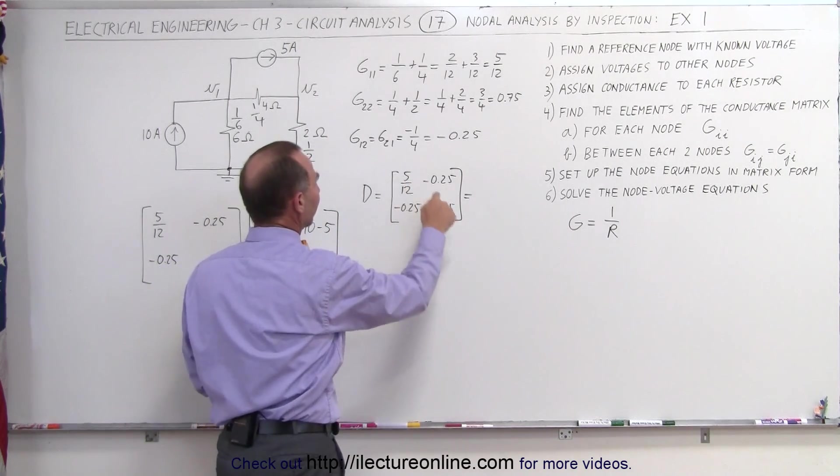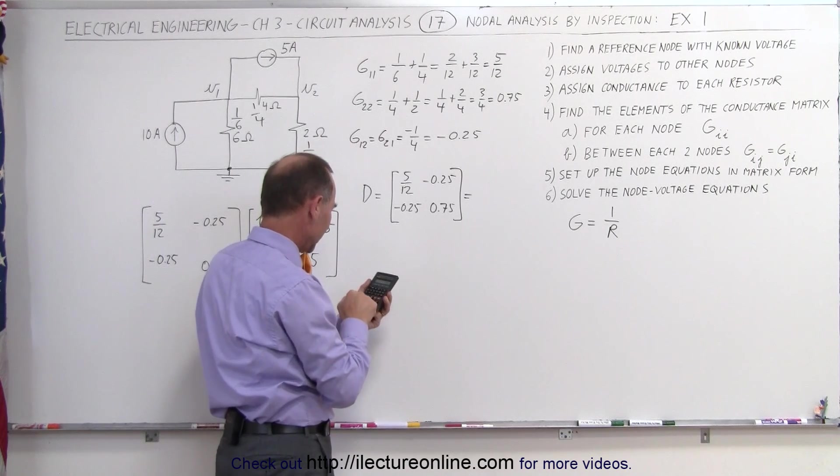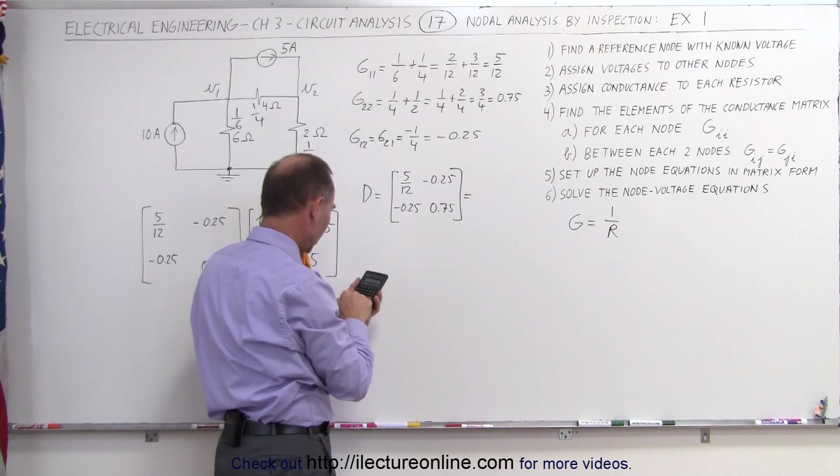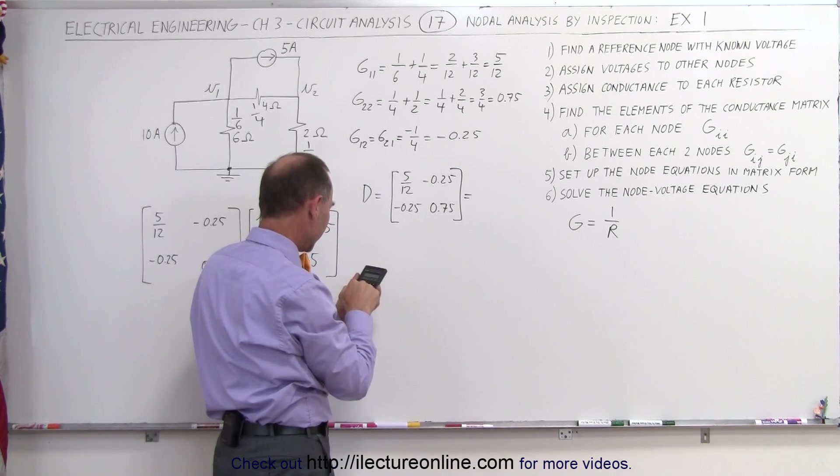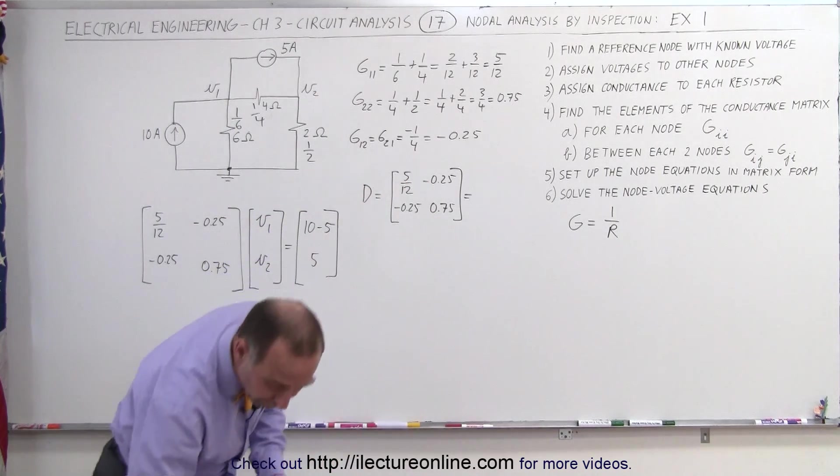We multiply 5 times 0.75, 5 times 0.75 and divide by 12. And then we subtract the product of those two minus 0.25 squared equals, and so the determinant in this case is 0.25.